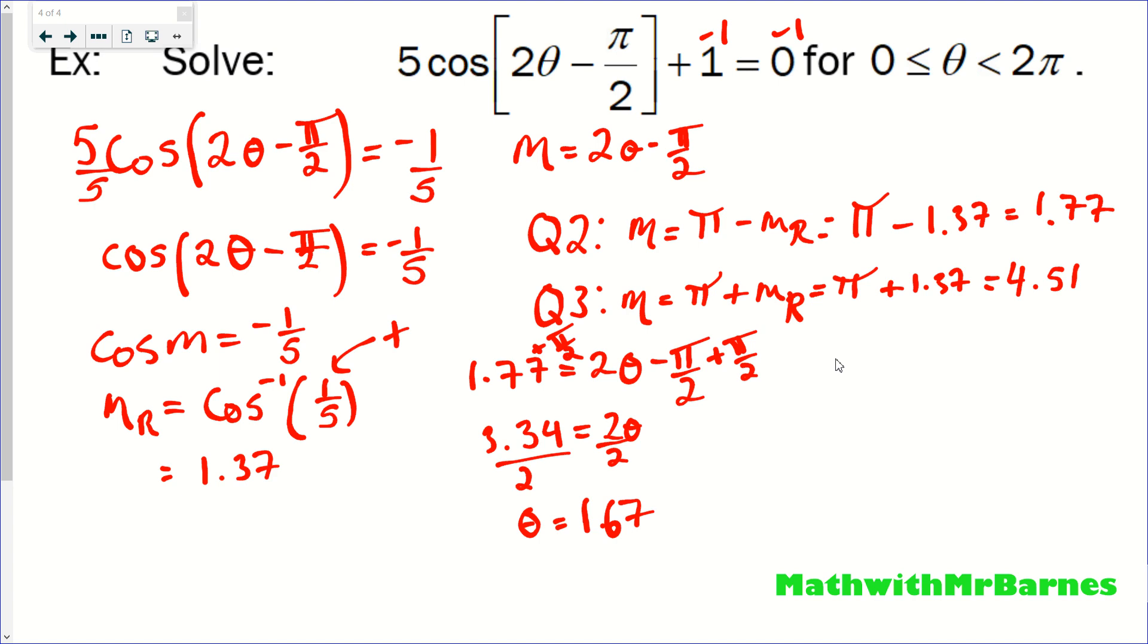Now the second solution is going to be the same idea. 4.51 is my second M value, and then 2 theta minus pi over 2, that giant mess there again. So same step, add pi over 2 to both sides. So I go 4.51 plus pi over 2, and that gives me 6.08 equal to 2 theta. Divide by 2, and then I end up with 3.04.